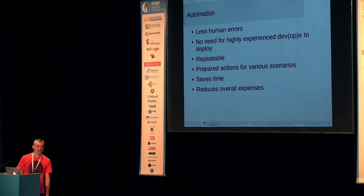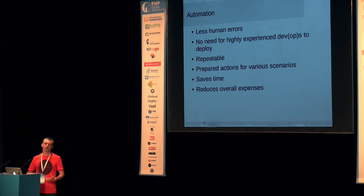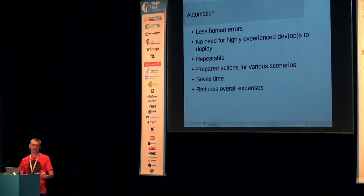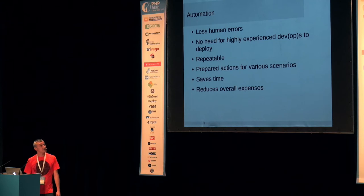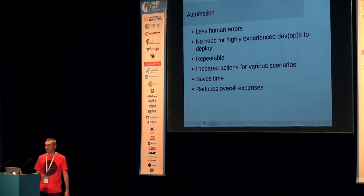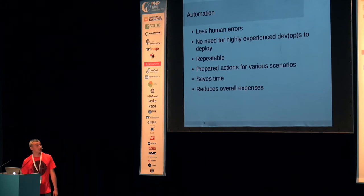Your deployments are repeatable — meaning that whenever you redeploy the same build, the outcome should be the same, and it will be the same if things are automated. You cannot predict all possible scenarios from the very beginning, but if you implement the problems you stumble upon through time into your deployment script, after some time you will get a robust deployment script that handles most cases. It goes without saying that automation saves a lot of time and reduces overall expenses.